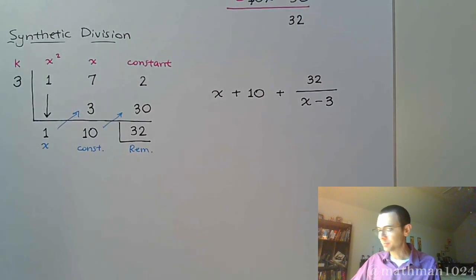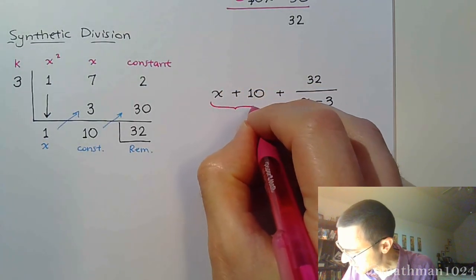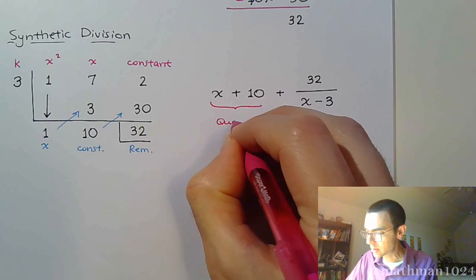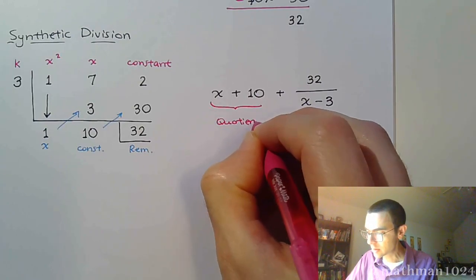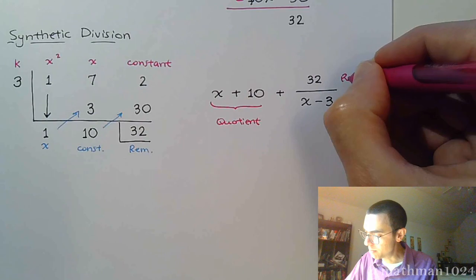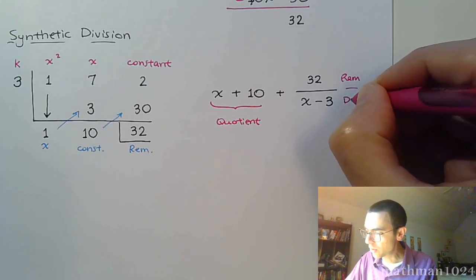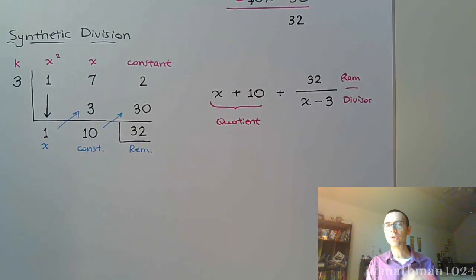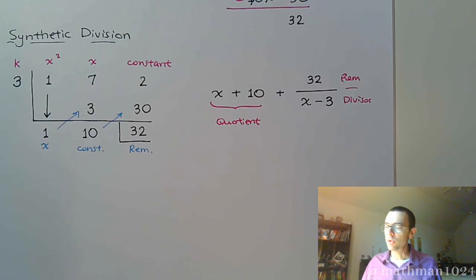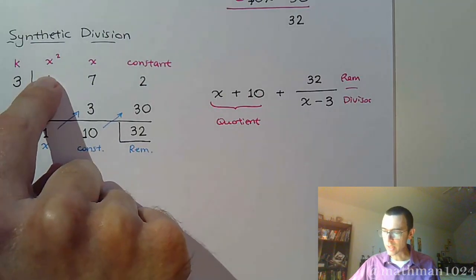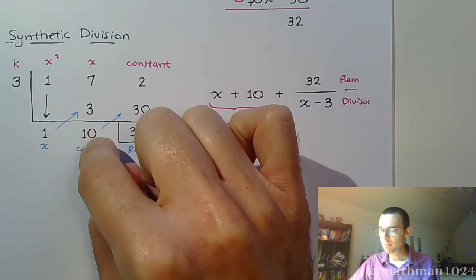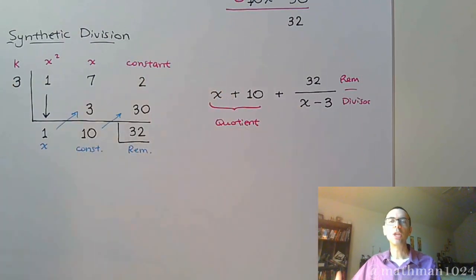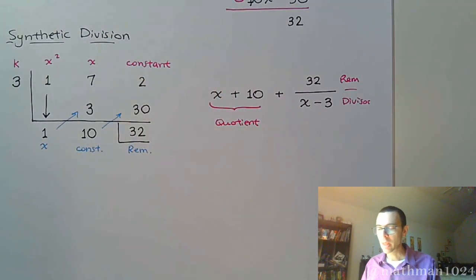This follows the pattern from the previous video: quotient plus remainder over divisor. The quotient is x plus 10, the remainder is 32, and the divisor is x minus 3. That's our answer. Once you get it set up, it's just a matter of dropping down that lead coefficient, then repeatedly multiply by K and add, and keep going if there are more terms.